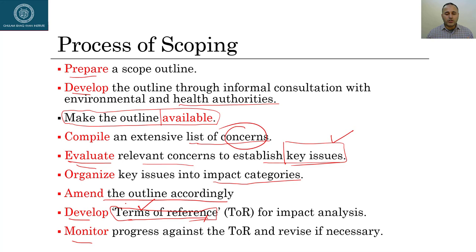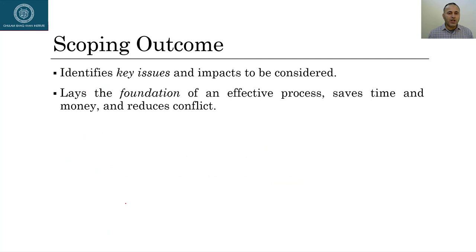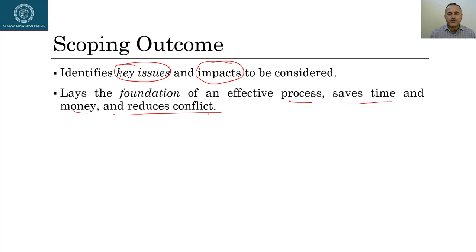Scoping outcomes: scoping identifies key issues and impacts to be considered. It lays the foundation of an effective process, saves time and money, and reduces conflict. Once issues and potential impacts are identified and corrective actions are suggested, it reduces the chances of any conflict.